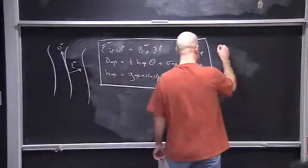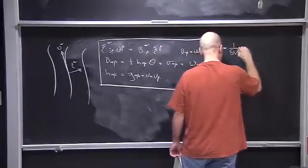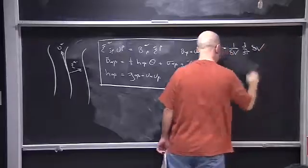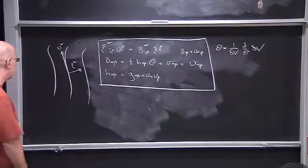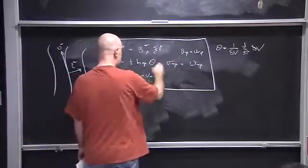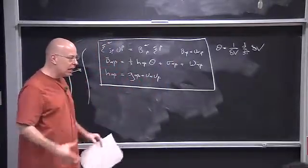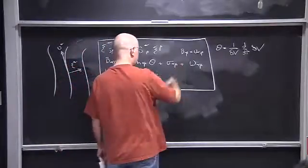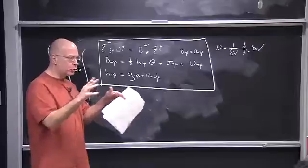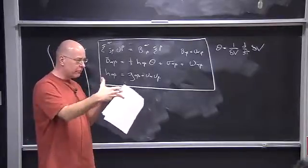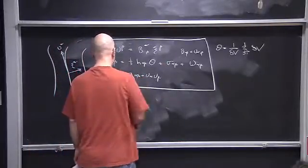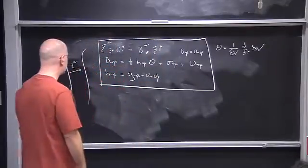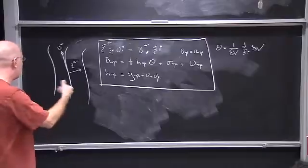Theta is the fractional rate of change of cross-sectional volumes along the congruence. We know this just by appealing to the fluid analogy. The shear is something that deforms shapes as opposed to scaling them, and the rotation tensor produces a twisting of the worldlines — a rotation of the shapes. All of that is contained in B, and B in general is a linear superposition of all those separate actions from each piece.